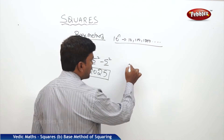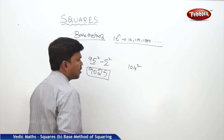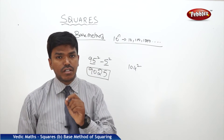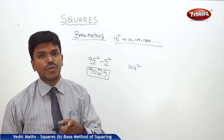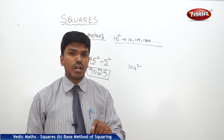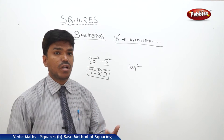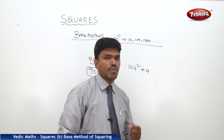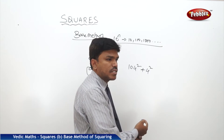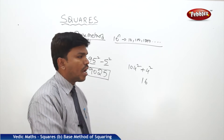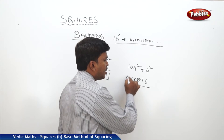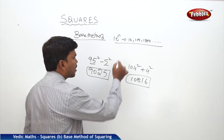One more example: I need 104 squared. 104 is nearer to 100, so we take the base as 100. Compare 104 with the base — it is more than the base. How much more? 4. So write plus 4. What is 4 squared? 16 — write 16 on the right side. And 104 plus 4 is 108 on the left side.